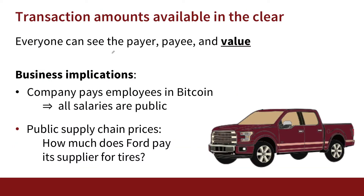This is a problem for businesses in that you can see who the payer is, who the payees are, and what the amounts were. For example, if Stanford University wanted to pay my salary in Bitcoin, everybody in the world would be able to see exactly what my salary is. So that's kind of a problem.